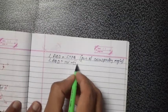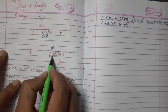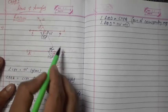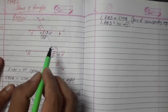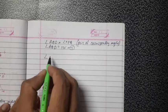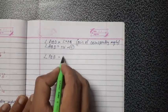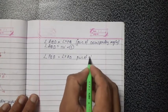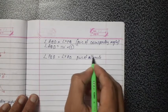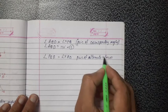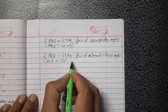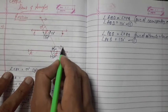Now angle XPQ and angle PQB are alternate interior angles. So angle PQB = angle XPQ because they are a pair of alternate interior angles. Therefore angle PQB = 130 degrees — that is the sixth angle.